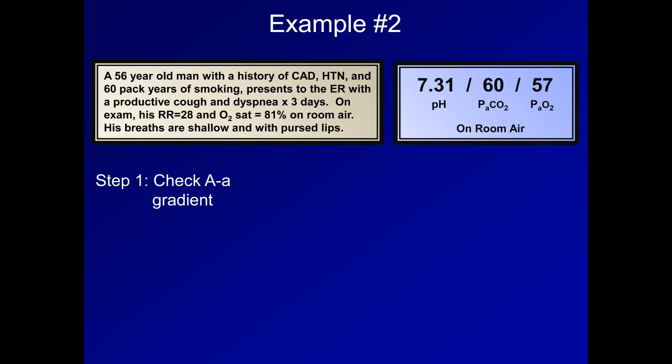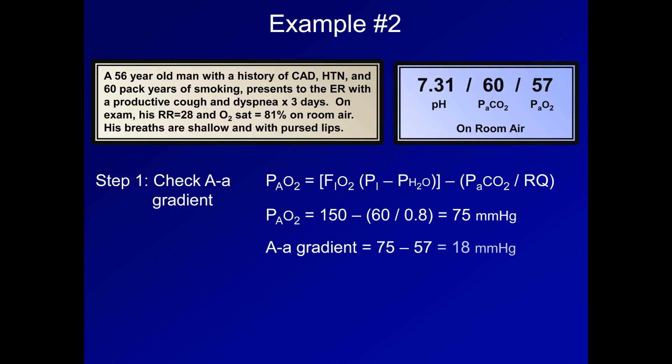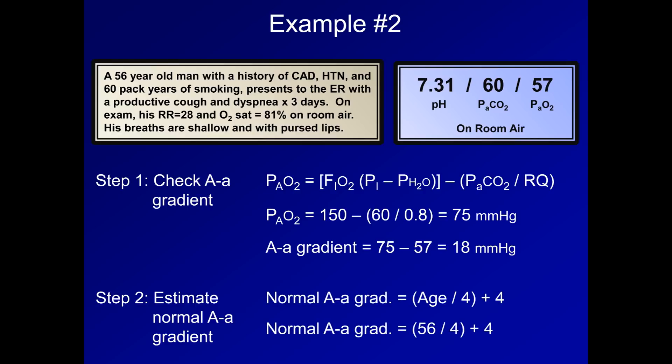If we are just focusing on his oxygenation, step one will be to check his AA gradient. Here is the alveolar gas equation. So his PAO2 equals 150 minus 60 divided by 0.8, which is 75 mmHg. His AA gradient is therefore 75 minus 57, or 18 mmHg. Step two is to estimate the normal or expected AA gradient for his age. For him, this is 56 divided by 4 plus 4, which is 18 mmHg.